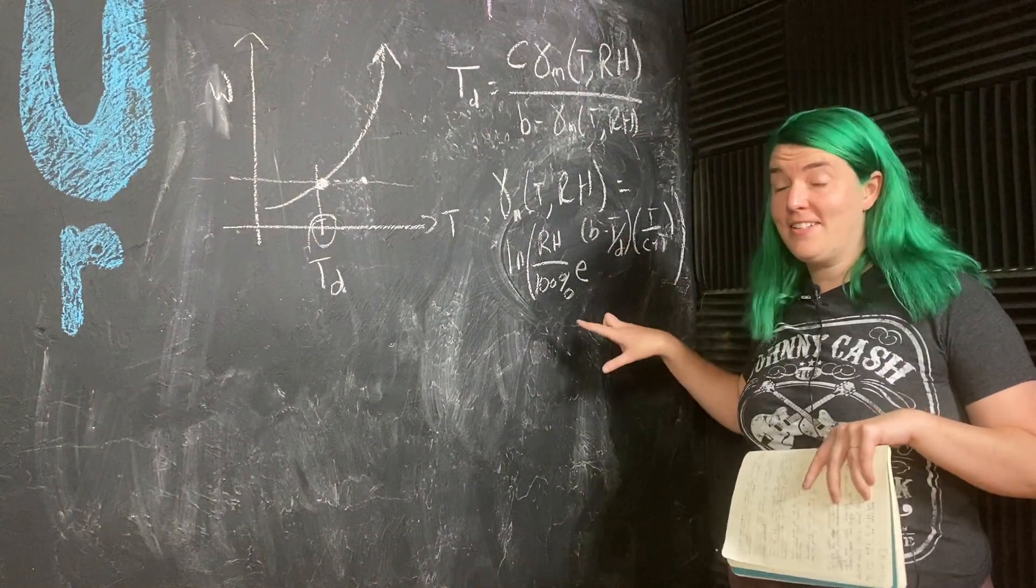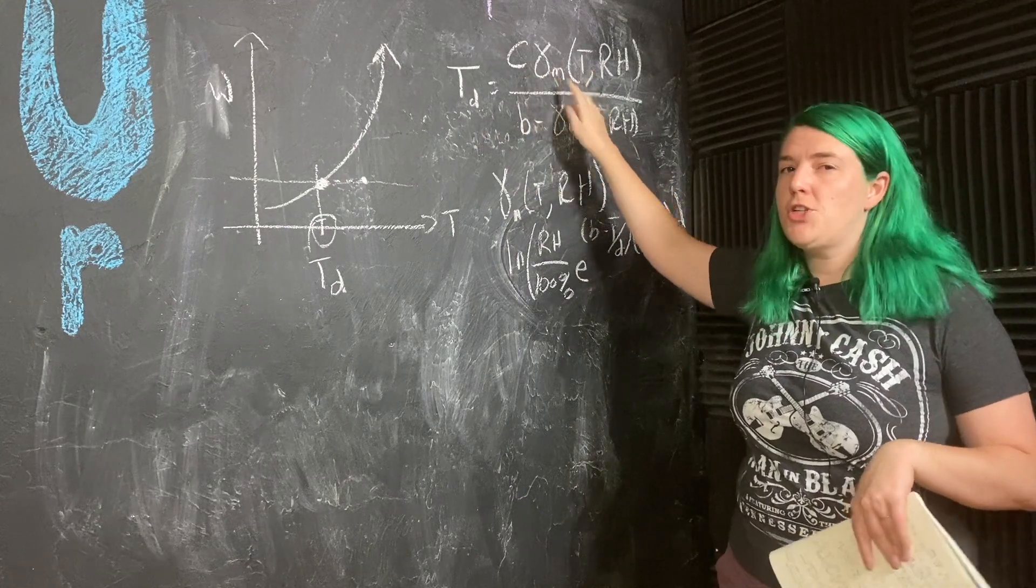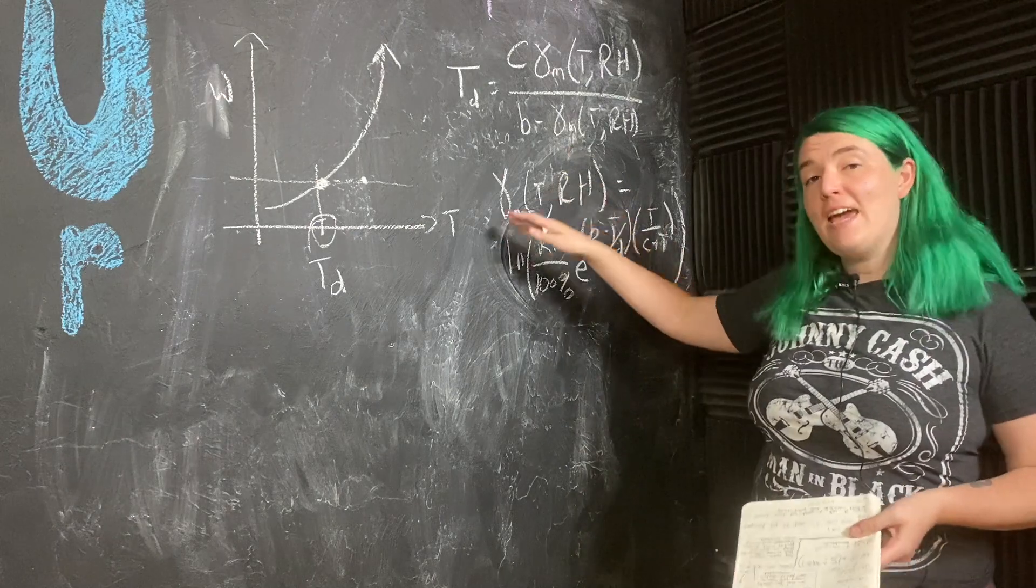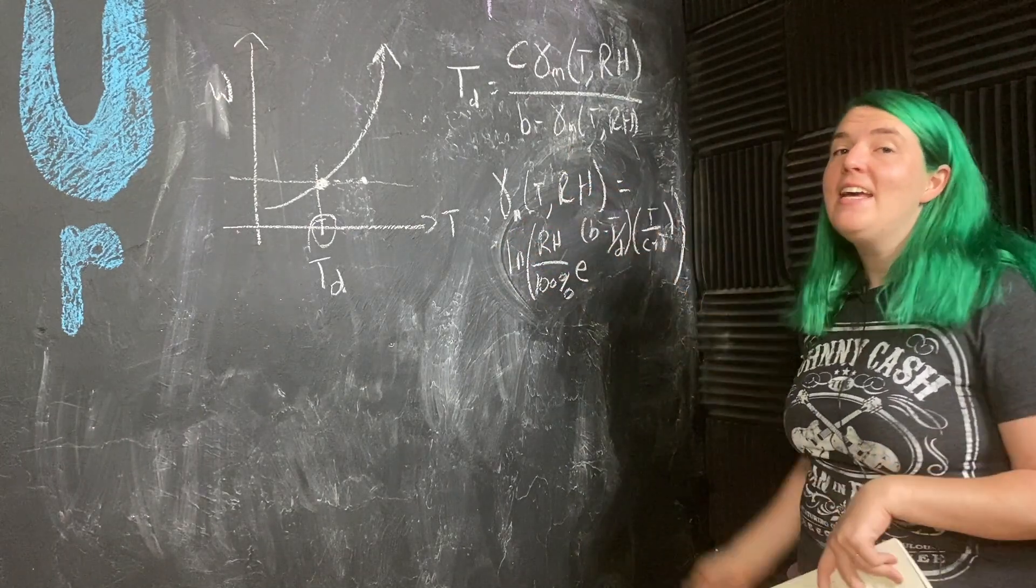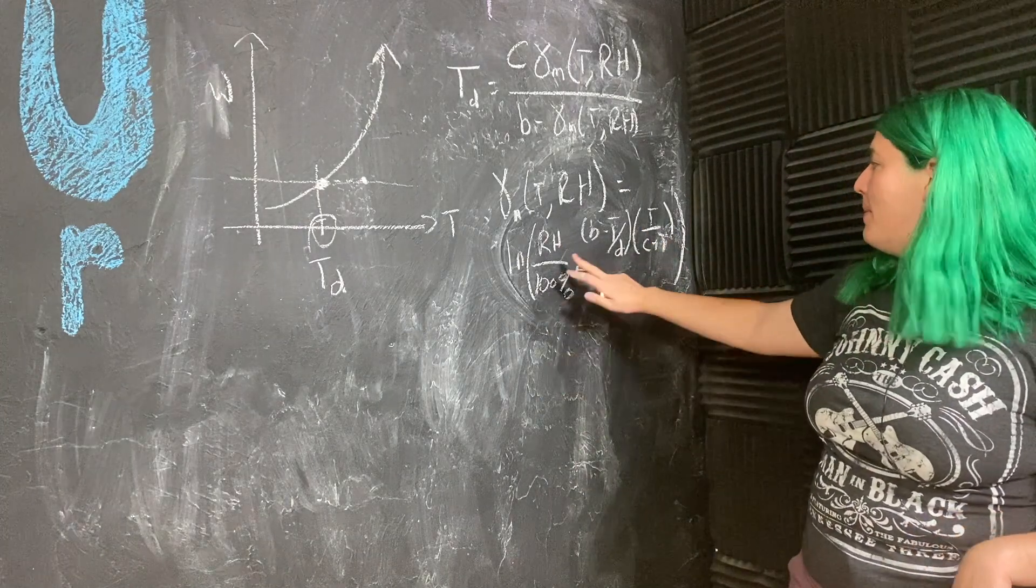So this is a lot, but dew point is C times this function gamma divided by B minus that same function. And gamma is a function of temperature and relative humidity.